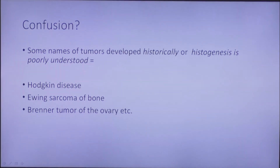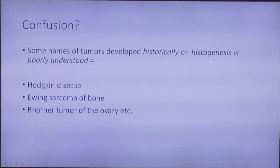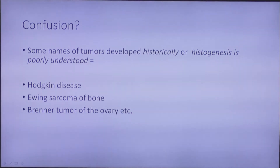Some tumors whose histogenesis is poorly understood carry names that have historically developed and can tell us nothing about tissue of origin or malignant potential — yet many of them still exist, for example Hodgkin disease, Ewing's sarcoma of bone, Brenner tumor of the ovary, and so on.